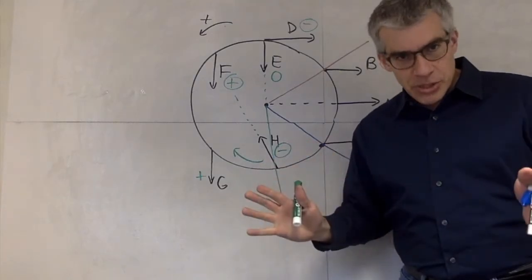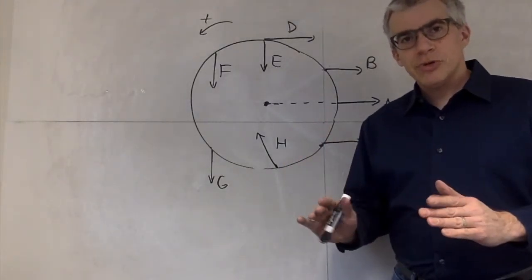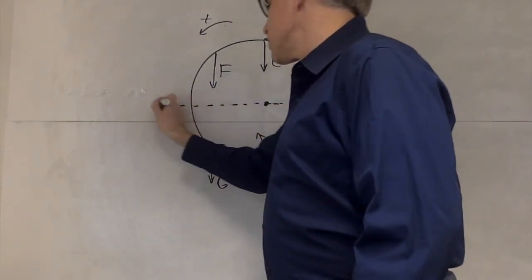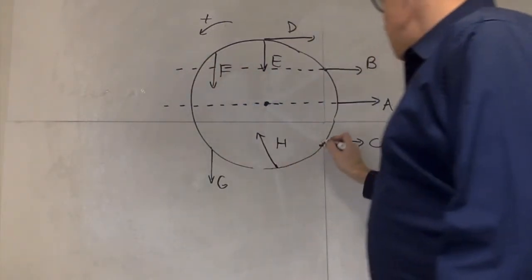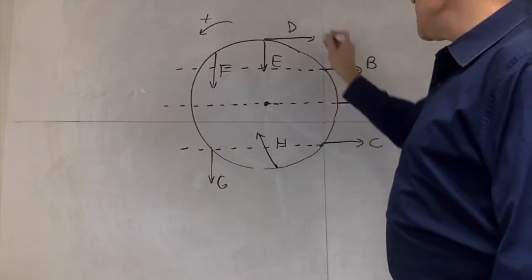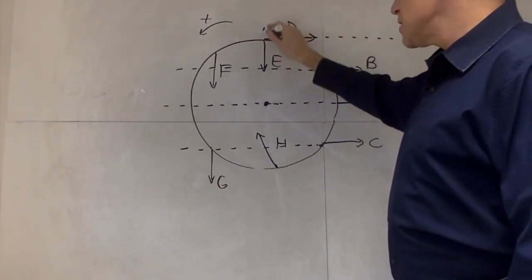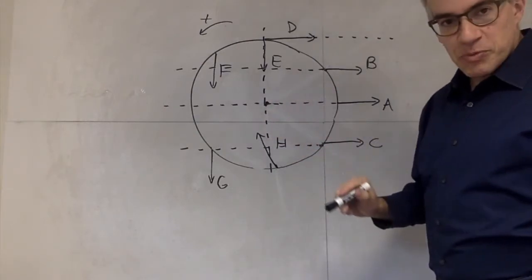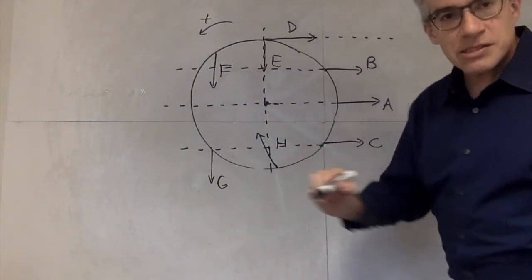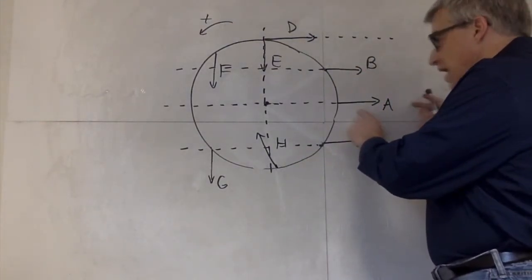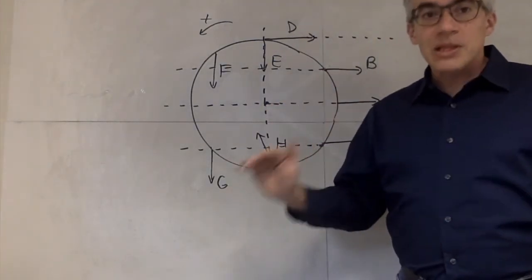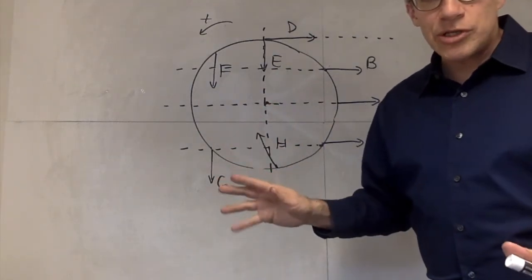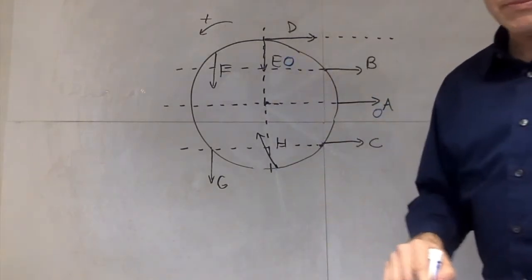Here's another method. For each force, we draw what's called the line of action — essentially the line through the vector. A has this line of action, B has this one, C has that one, D has that one, E has this one, and so on. We imagine a circle centered at the pivot point and expand it until it hits the line of action. In the case of A, the pivot is directly on the line of action — so no torque. For E, no torque either. Zero for A and zero for E, just as we found before.